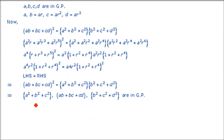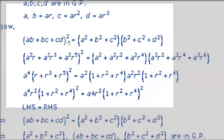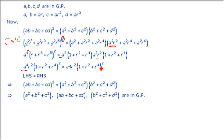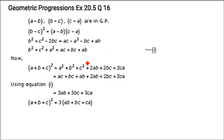A, B, C, D in GP: prove A² + B² + C², AB + BC + CD, B² + C² + D² are in GP. Substitute the values. Take A² common giving A⁴ and A⁴R⁴ outside. For the middle term take A²R common giving A⁴R². With (1 + R²) and R² factors, left-hand side equals right-hand side.